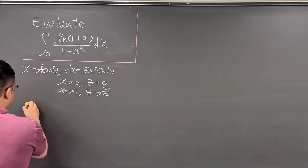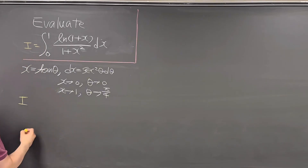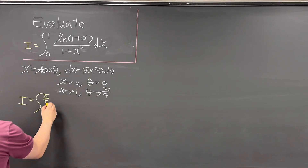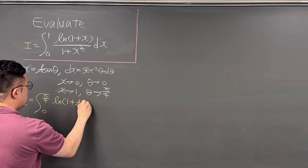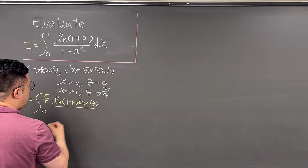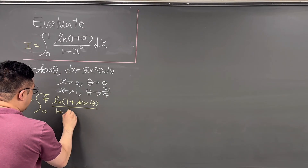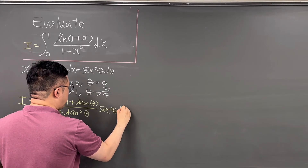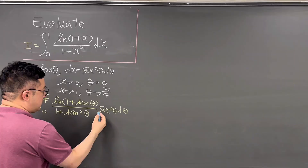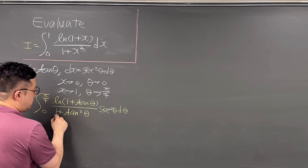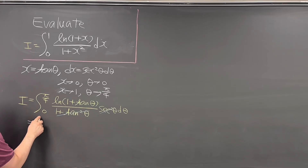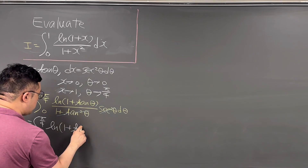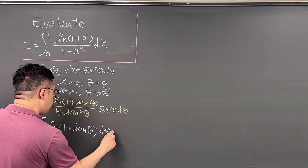So we can rewrite this integral — let me just call this I. I has to be the same as the integral from 0 to pi over 4 of ln of 1 plus tangent theta, over 1 plus tangent squared theta, times secant squared theta d theta. Using the trigonometric identity, we can cancel the secant squared theta and 1 plus tangent squared theta, leaving the integral from 0 to pi over 4 of ln of 1 plus tangent theta d theta.